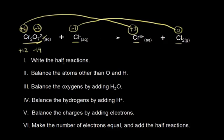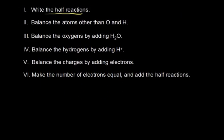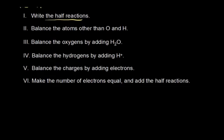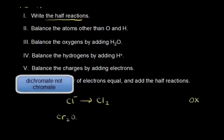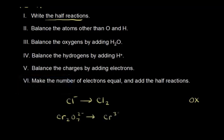In terms of balancing, our first step is to write the different half reactions. We break those into an oxidation half reaction and a reduction half reaction. The chloride anion going to chlorine is our oxidation half reaction. The reduction half reaction involved chromium — the dichromate anion Cr2O7 2- going to Cr3+. That's step one: write the different half reactions.